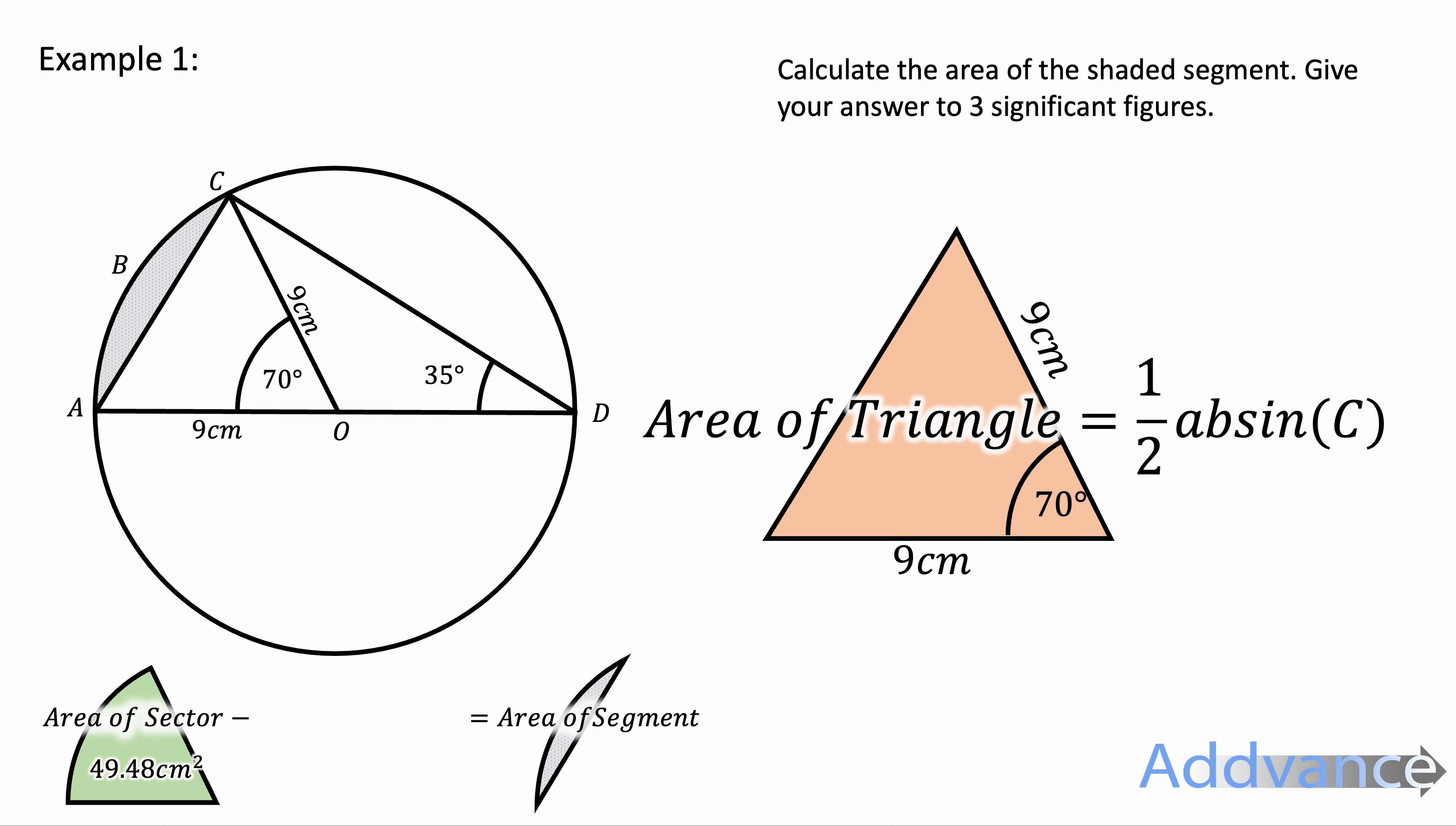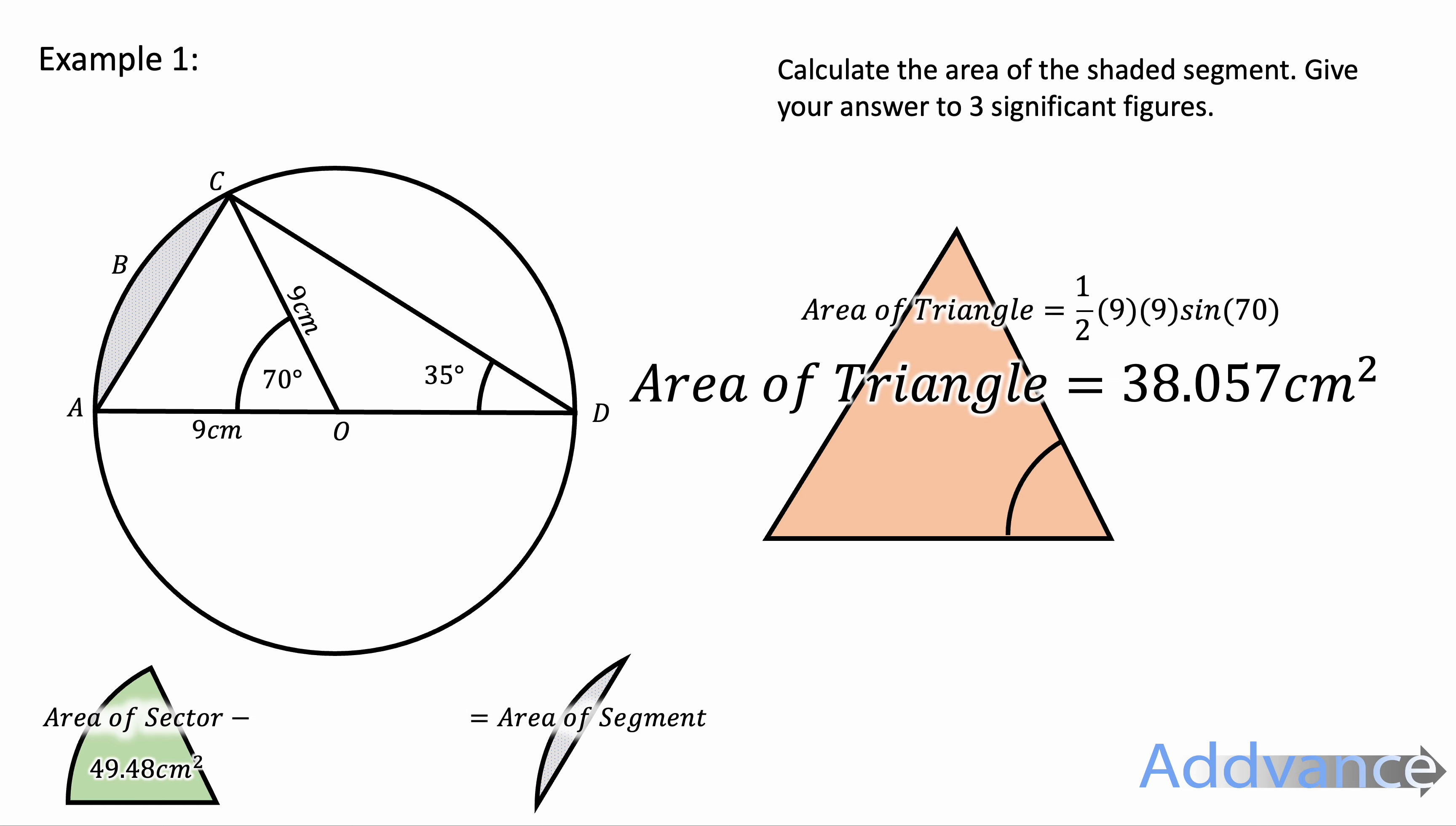We put those numbers in. So a and b are 9 and 9cm and the angle is 70 degrees. Again, I type that into my calculator and I get 38.057cm squared.